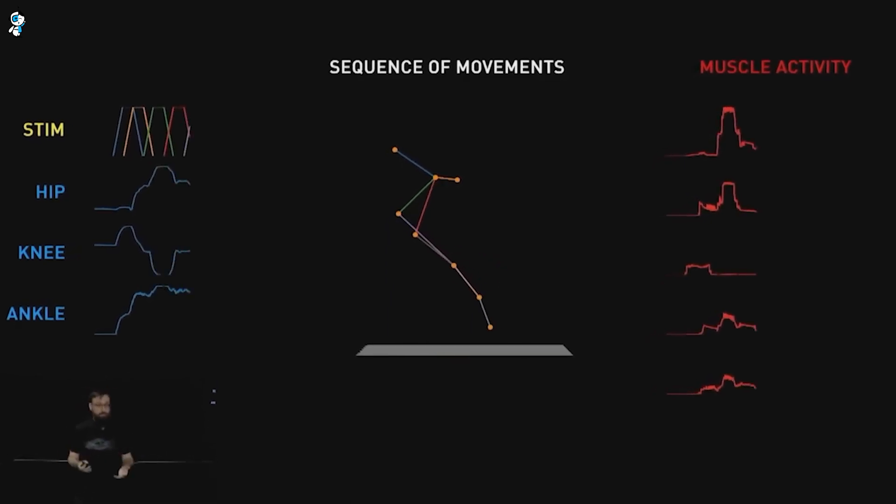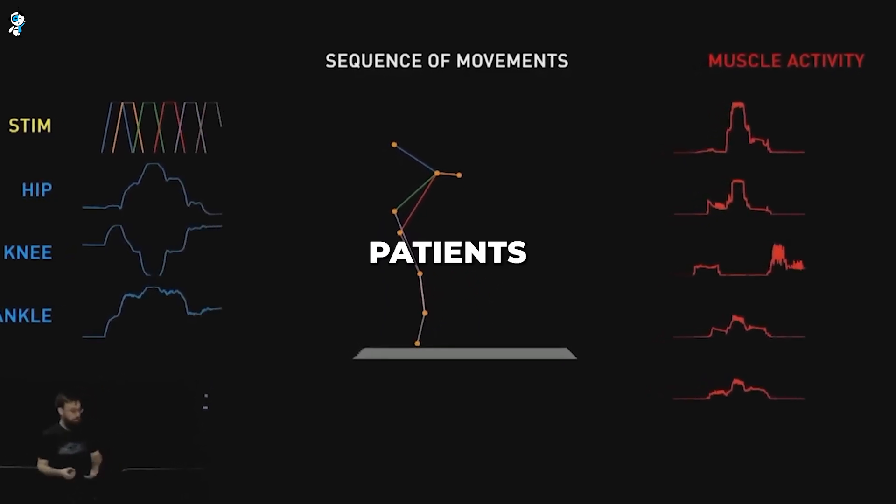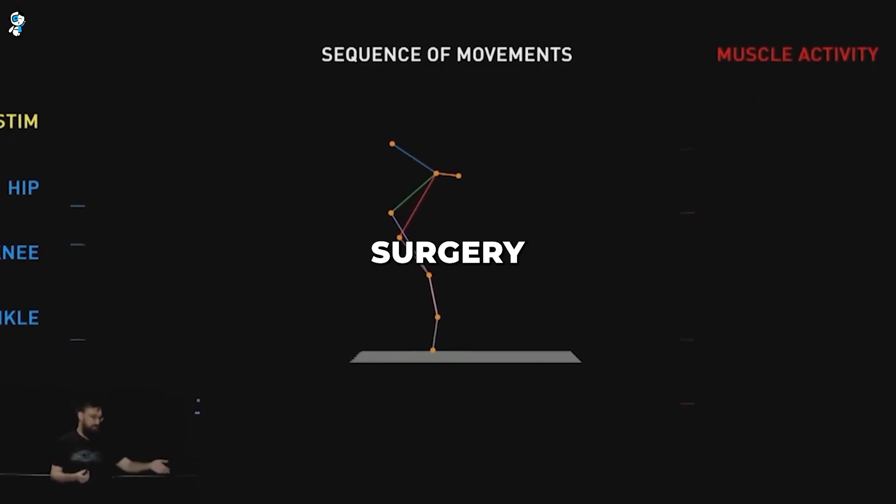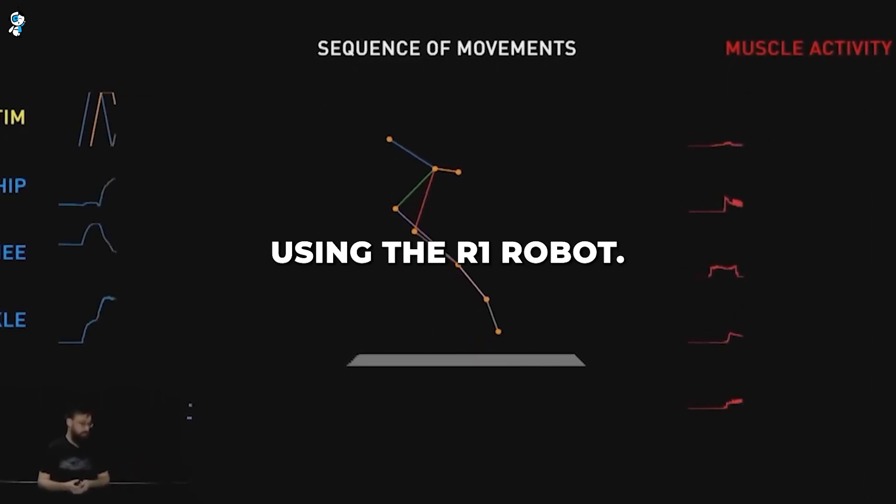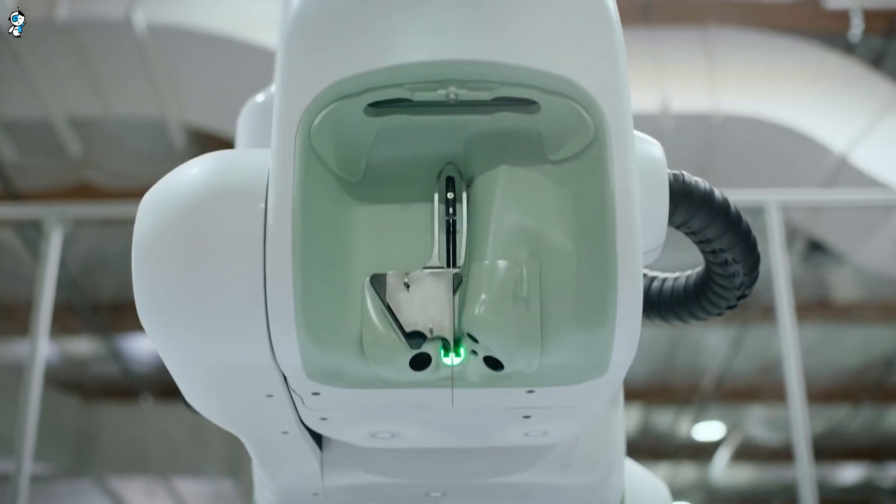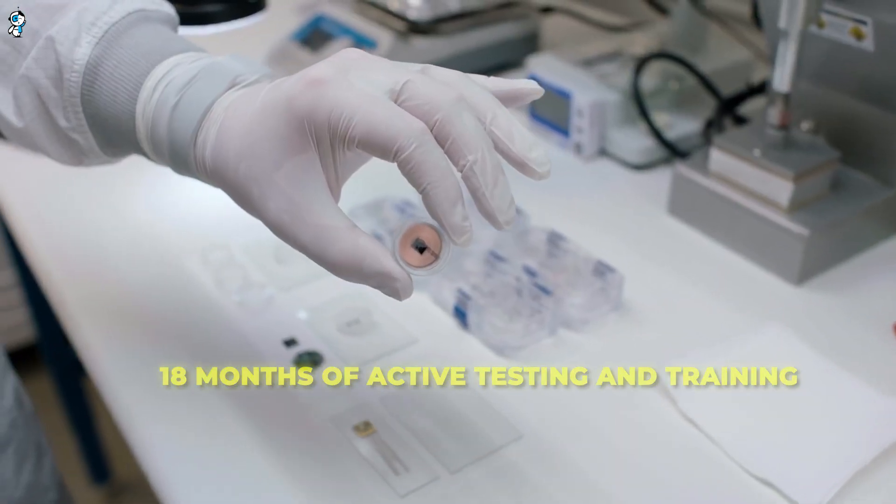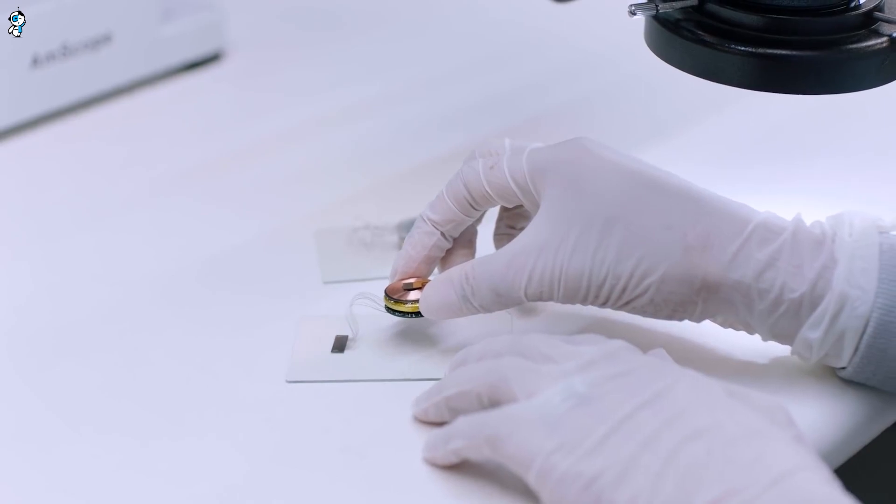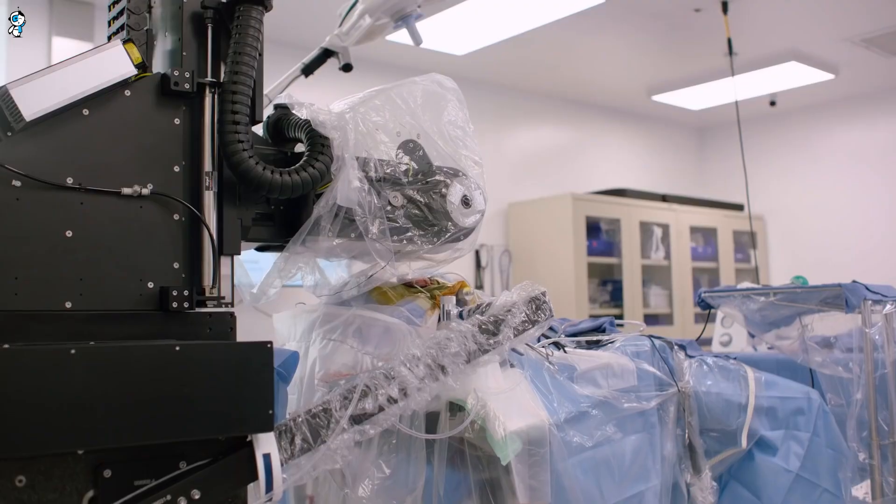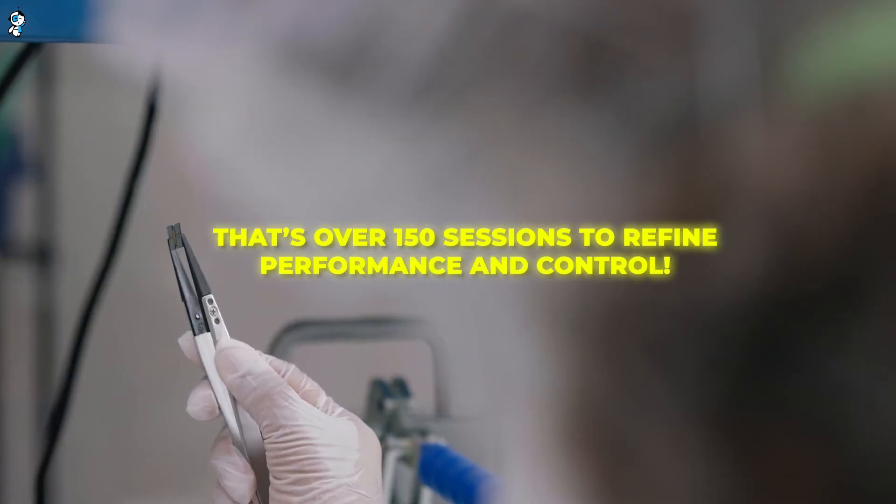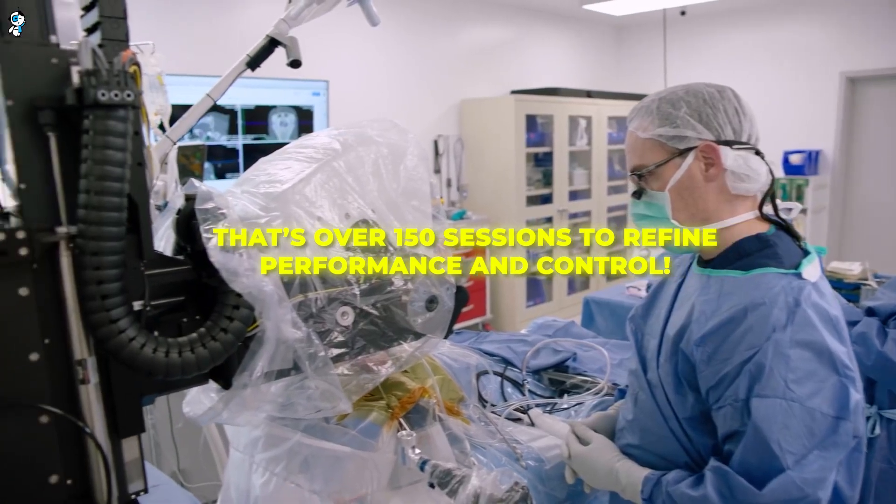But the journey to get there during the PRIME study is intense. Patients will undergo initial implantation surgery to embed the N1 threads using the R1 robot. This is followed by 18 months of active testing and training with the Neuralink system. Patients must commit to at least two brain-computer interface training sessions per week with Neuralink's research team. That's over 150 sessions to refine performance and control.